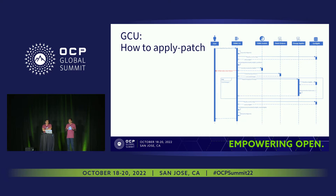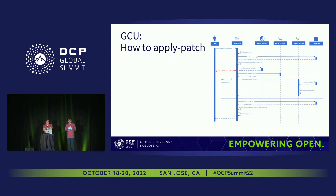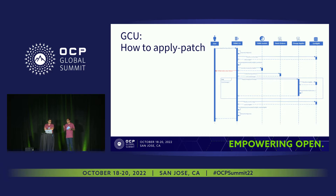The next step is to order the patch, because the patch will have multiple operations like remove, add, create, etc. We need to make sure we apply the patch onto the config DB in the proper sequence so that we don't have conflicts. For example, the ACL on a port — we should make sure the ACL is removed before the port is removed. So all the sequencing is done in the order patch step. The order patch gives us a set of JSON patches as separate patch files, which are then applied in a loop onto the actual config DB.